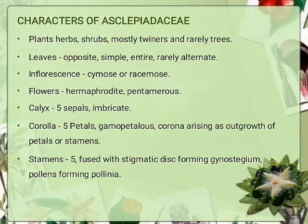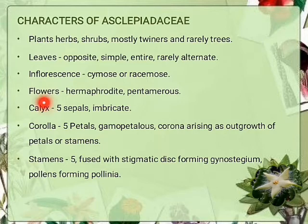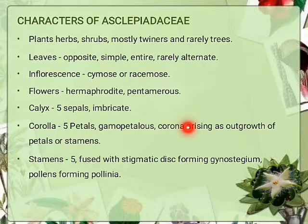Characters of Asclepiadaceae: plants are herbs, shrubs, mostly twiners, and rarely trees. Leaves opposite, simple, entire margin, and rarely alternate. Inflorescence cymose or racemose type. Flowers hermaphrodite (bisexual), pentamerous — floral organs sepal and petals always present in five numbers. Calyx consists of five sepals with imbricate aestivation. Corolla consists of five petals, fused. Corona arises as outgrowth of petal or stamen — the word corona means a crown-like structure and is a characteristic of Asclepiadaceae family.